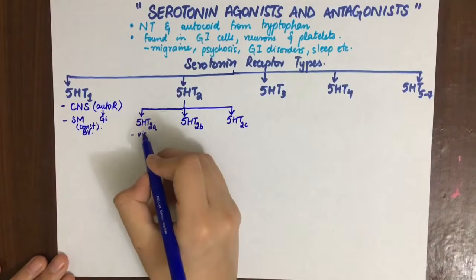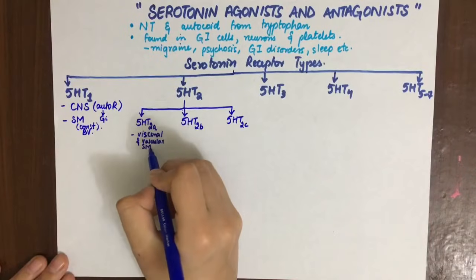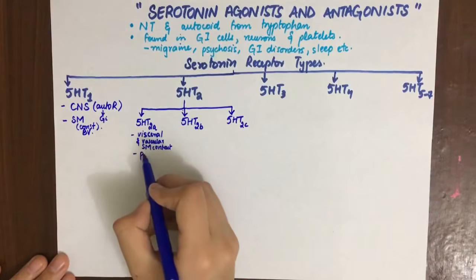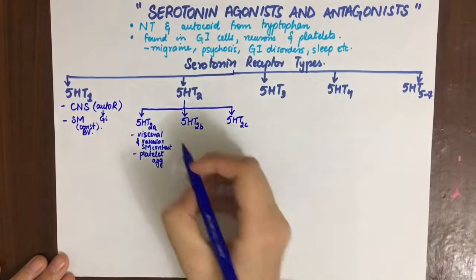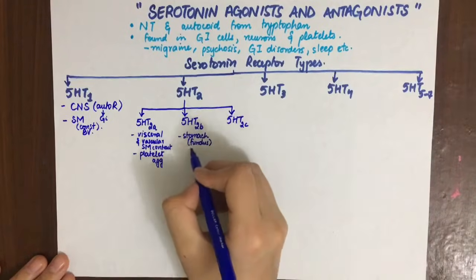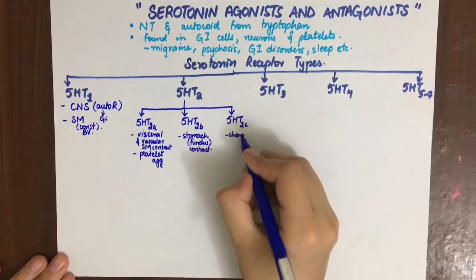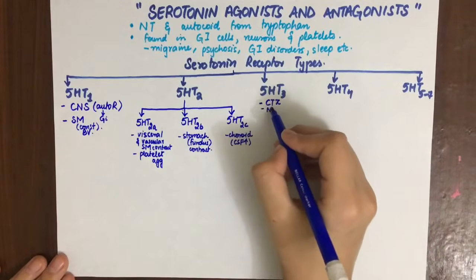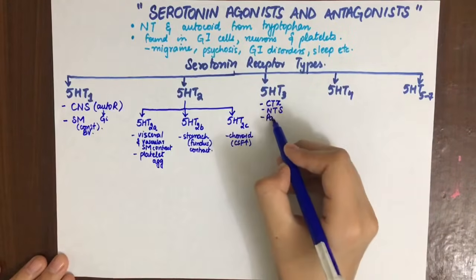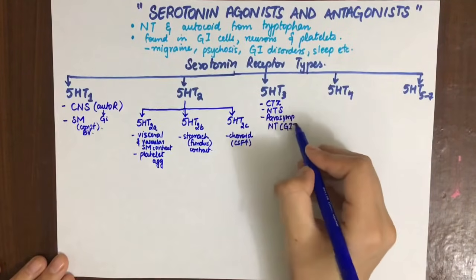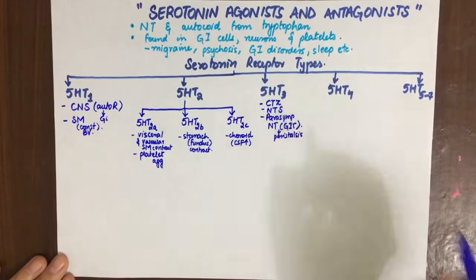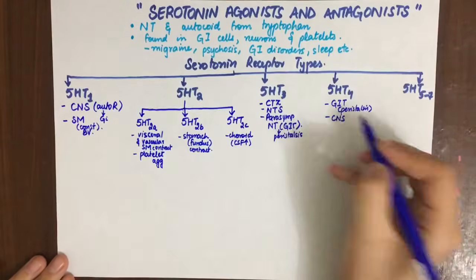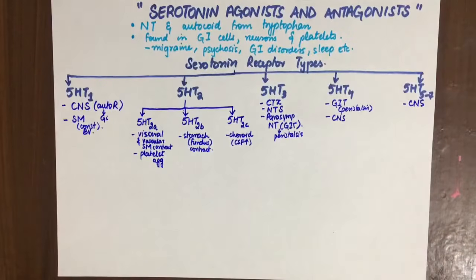5-HT2A is present in visceral smooth muscle causing contraction and is also involved in platelet aggregation. 5-HT2B is involved in stomach contraction, and 5-HT2C is present in the choroid plexus in the CNS, increasing CSF production. 5-HT3 is present in the CTZ causing vomiting, the nucleus tractus solitarius, and mediates parasympathetic neurotransmission in the GIT causing pro-peristalsis. 5-HT4 is present in the GIT causing peristalsis and in the CNS. 5-HT5-7 is present in the CNS.